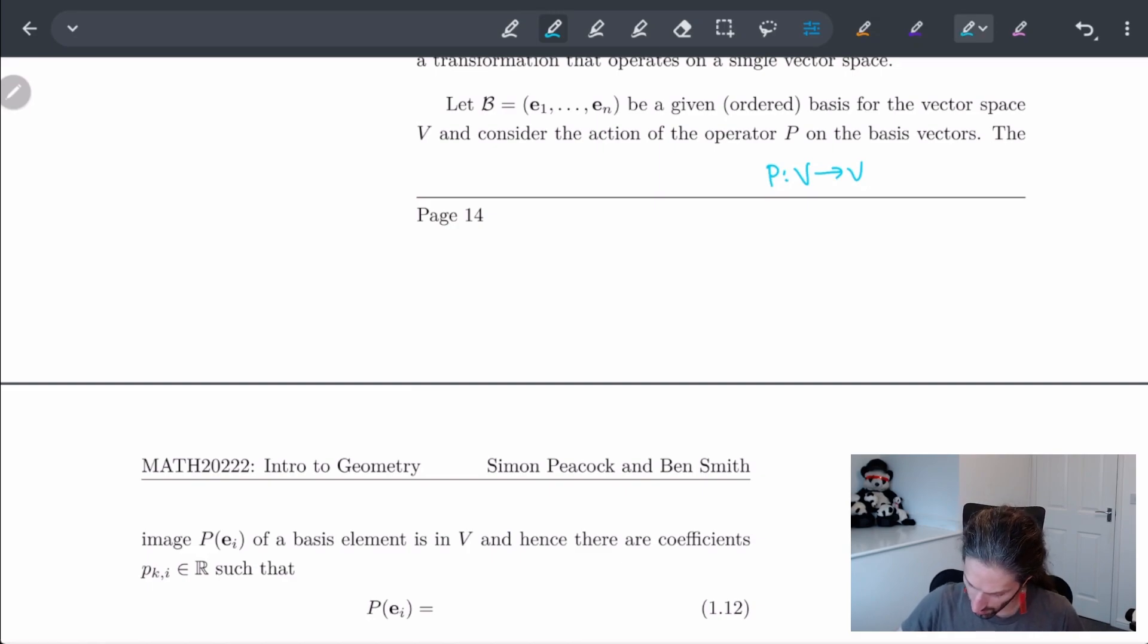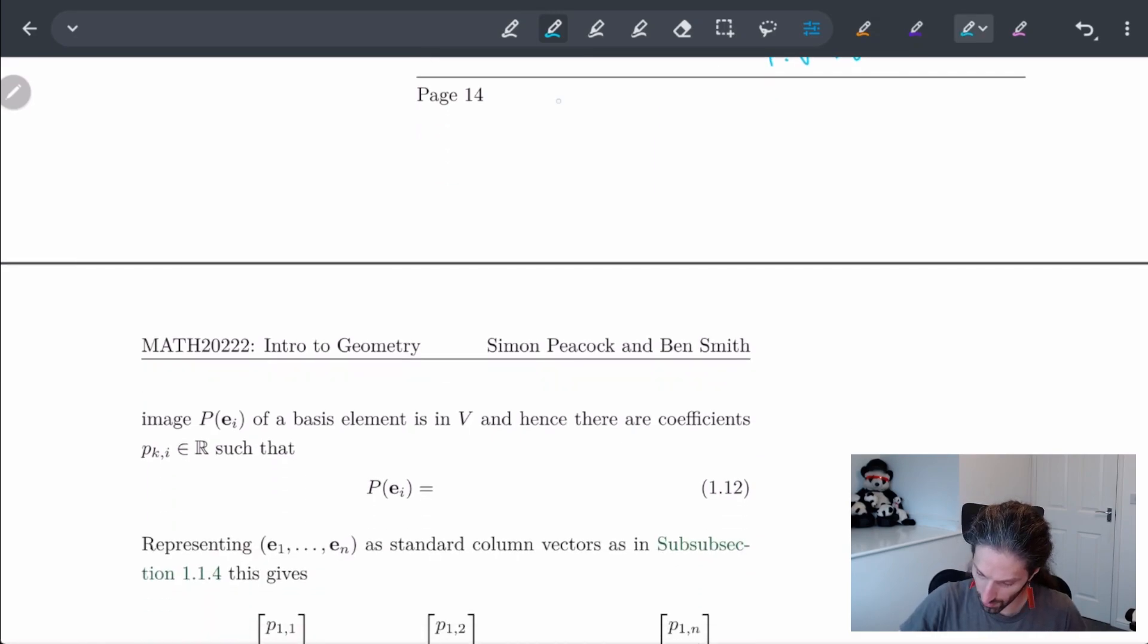So what is P doing on a certain basis element? Well, it's going to send it to some linear combination of the other basis elements. We're staying inside V. So basically, this is going to send us to some linear combination. There's going to be K of them, one for each of the basis elements. K is equal to one to N. And because we're looking at E_i, we'll denote P_ki as the coefficient.